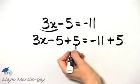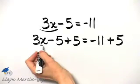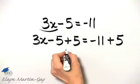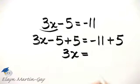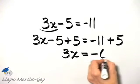On the left side, negative 5 plus 5 is 0, so I have 3X plus 0, or simply 3X, equals negative 11 plus 5, and that is negative 6.